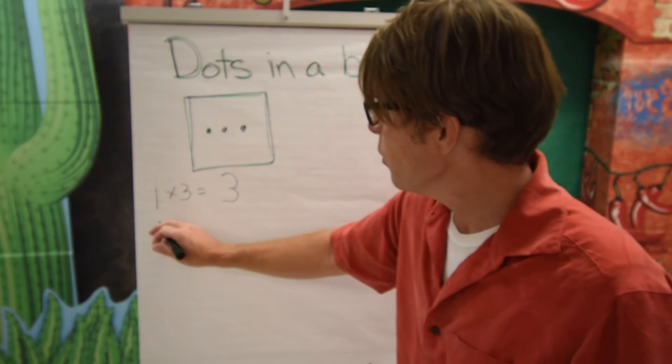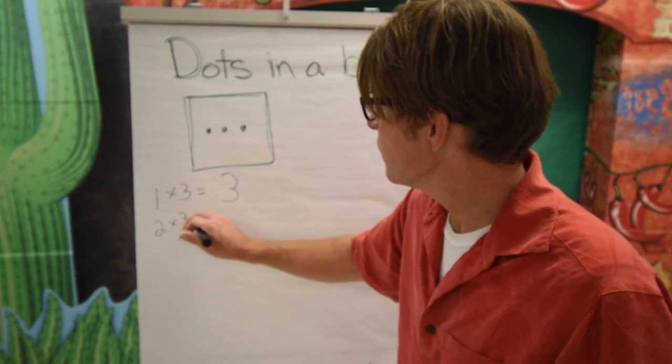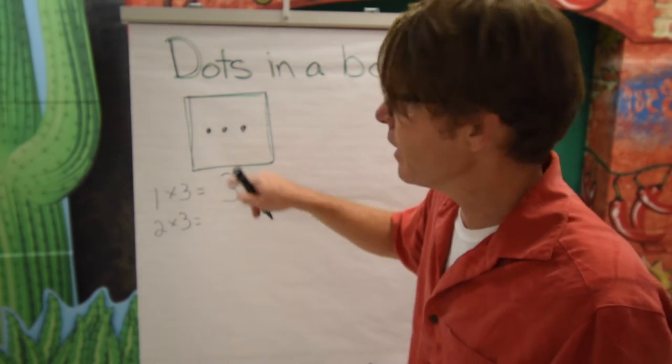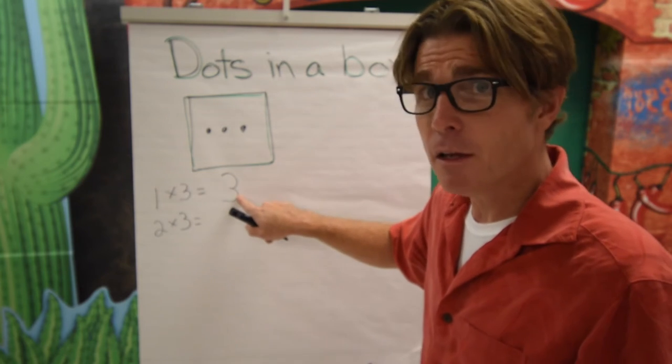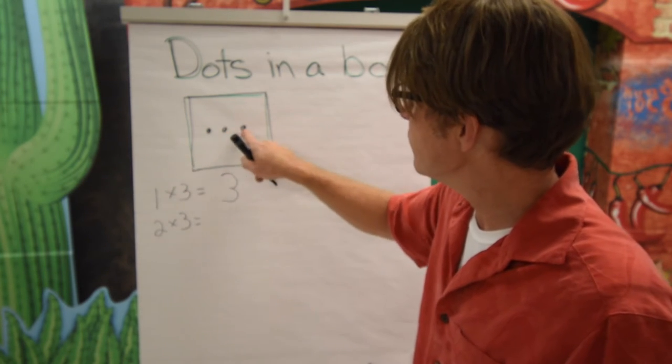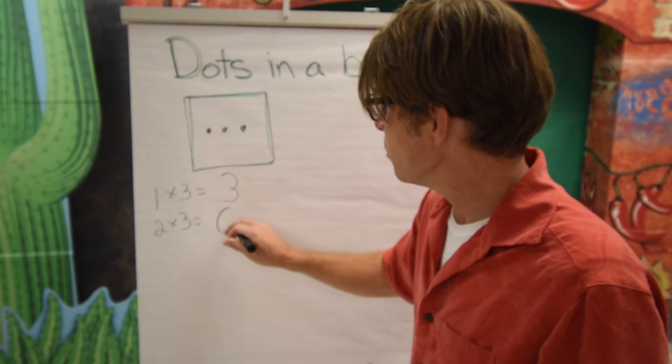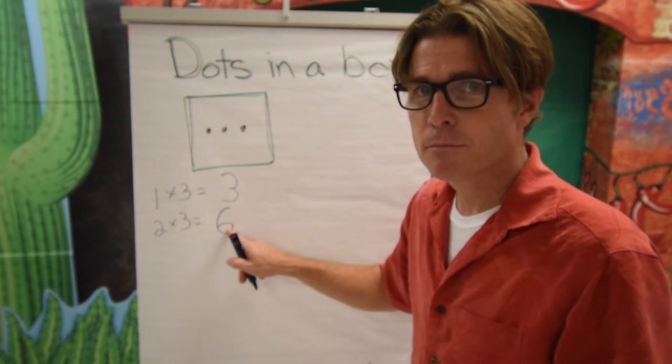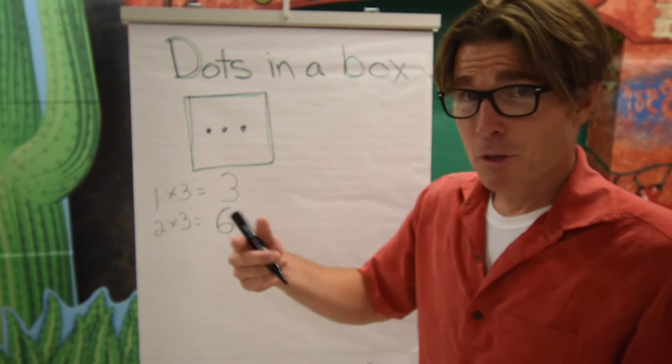Now from here we're going to do two times three. To find that one out we take our three and then we count the dots in the box. So we go three, four, five, six. And we write our six down. So two times three is six, and we'll continue that way.